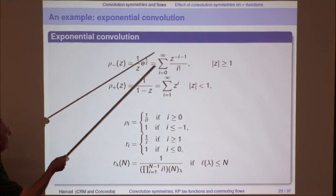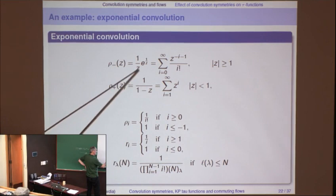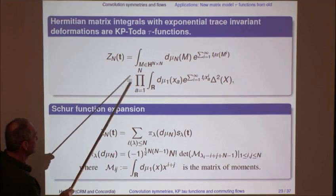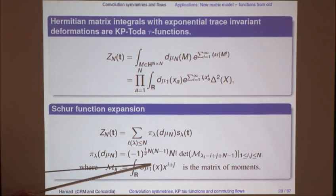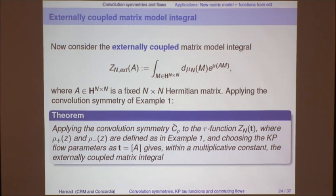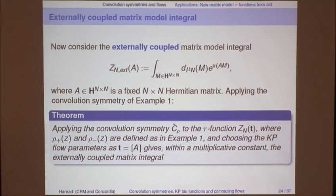One example: take the exponential series e^{1/z}. In the conventions used, rᵢ = 1/i! for the relevant terms. This gives a specific r_lambda. Plugging into the formula and starting with a matrix model expansion — in which the Plücker coordinates are determinants of the matrix of moments — this is the well-known Schur function expansion of the matrix model partition function. Multiply each Plücker coordinate by that combinatorial factor r_lambda, and you get the Schur function expansion for the externally coupled matrix model, in which the Tᵢ's are interpreted as traces of powers of the external matrix. So this is one example of how you get a new matrix model from an old one by applying the convolution symmetry.